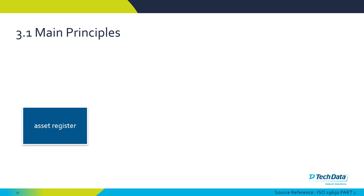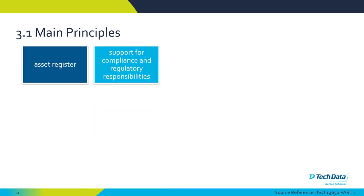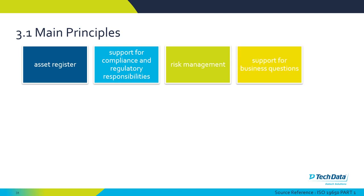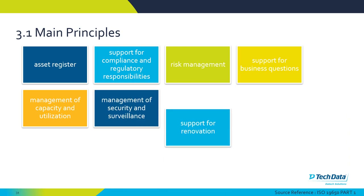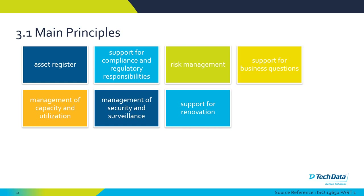Defining the information needed and the output information model involves creating an asset register. The client should specify their reasons for acquiring certain information — for example, installation information for air handling units related to maintenance, knowing when to replace them in 10, 15, or 20 years, or when to replace the filters. Other considerations include support for compliance and regulatory responsibilities, risk management, support for business questions — such as the cost of investing in higher quality windows now versus replacing them sooner — and support for future renovation.